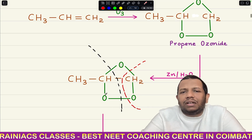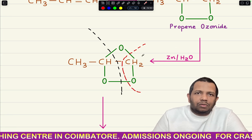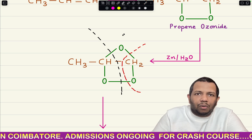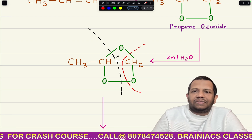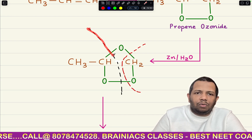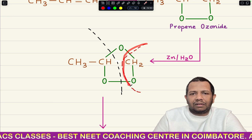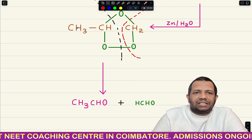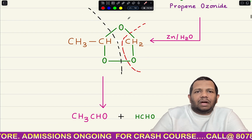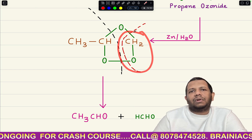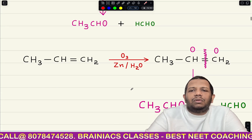Now this ozonide is broken using a reducing agent — zinc and water. Note there is no carbon-carbon bond here, that is already gone. With zinc and water, one C–O bond is broken here and another O bond is broken. Similarly on the other side, one C–O bond breaks and another breaks too. So what you get fundamentally is CH3CHO from one part and HCHO from the other part. That is how you get the products.